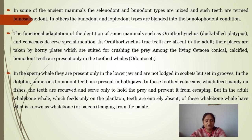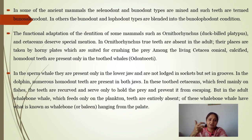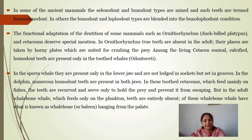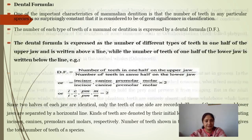In dolphins, numerous homodont teeth are present in both jaws. These toothed cetaceans feed mainly on fish. In adult whales and baleen whales, there is a baleen plate present which functions in filtering plankton.